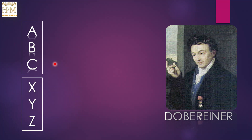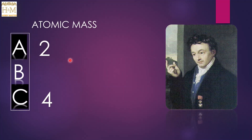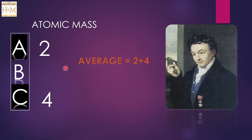Do you think these groups will have elements arranged randomly? Of course not. Döbereiner arranged these three elements in such a way that the average atomic mass of the first element and the third element is equal to the atomic mass of the second element. For example, the average atomic mass of element A and element C — (2 + 4) / 2 = 3 — which equals the atomic mass of element B.